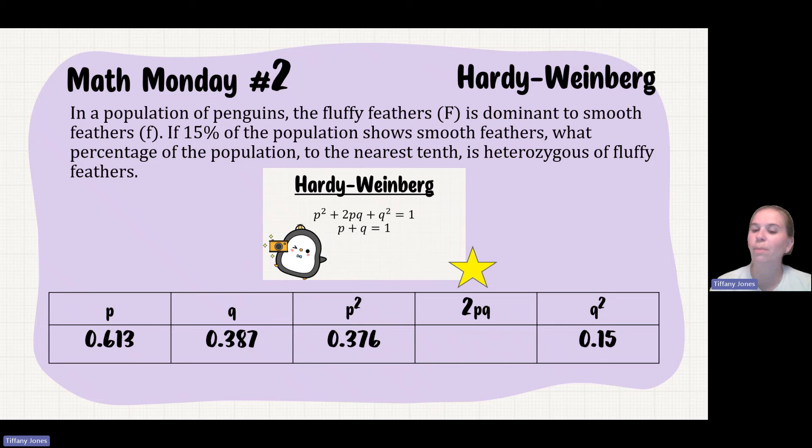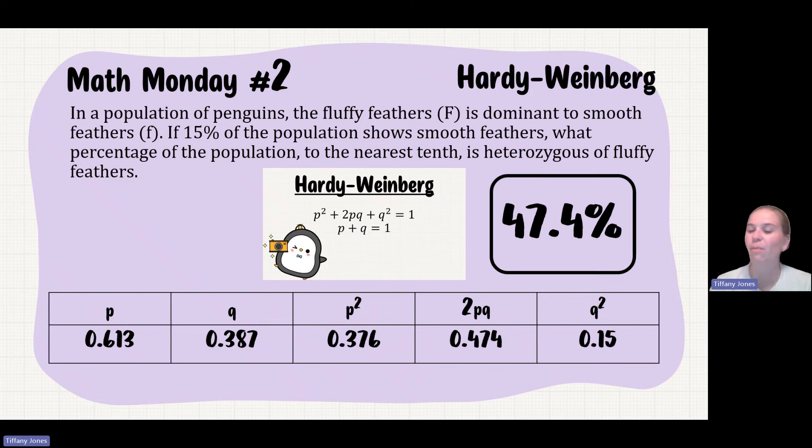And then in order to find 2 times P times Q, I say 2 times my P, which is 0.613, times my Q, which is 0.387. And that gives me 0.474. Now it tells me to give this in my percentage. So that would be 47.4%.